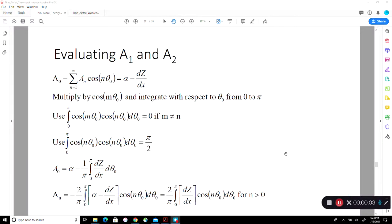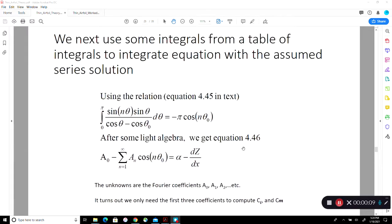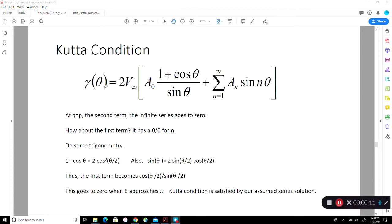We are going to be concluding our thin aerofoil theory with some worked out examples. Remember the thin aerofoil theory has a Fourier series solution for the circulation distribution over the camber line, which we are placing rather than directly on the camber line along the chord line. Thickness is completely neglected of course.